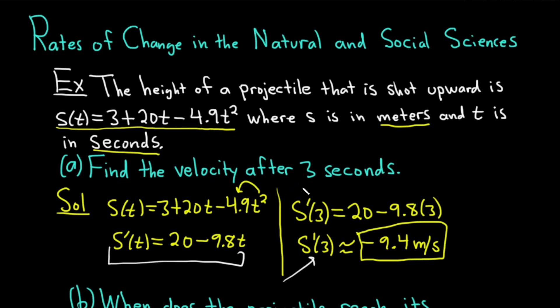Part a wanted the velocity after 3 seconds. So the key point is that whenever you have a position function, the derivative is always going to be the velocity function. So in this case, we just took the derivative, which is our velocity function, and we plugged in 3 and we got -9.4.